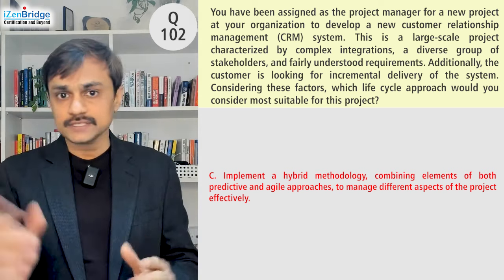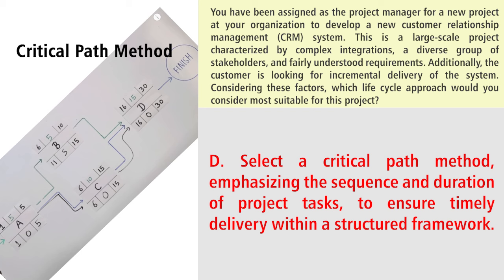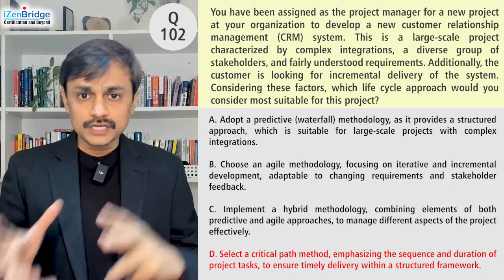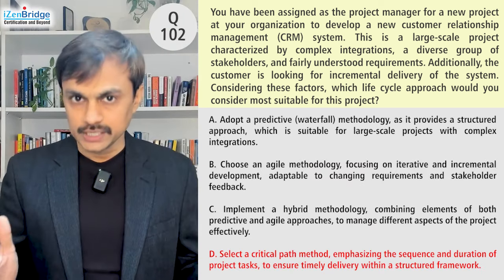Option D: select the critical path method, emphasizing the sequence and duration of project tasks to ensure timely delivery within a structured framework. However, the critical path method is a scheduling technique — it is not a life cycle. It can be used within predictive or hybrid approaches. In pure adaptive approaches, we use sprinting, stories, and incremental release planning rather than critical path. So Option D does not fit because we need to select a life cycle approach.